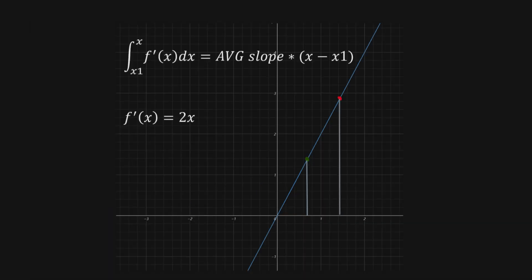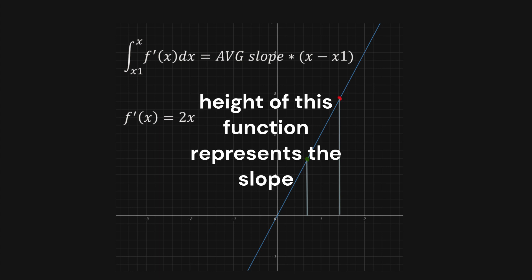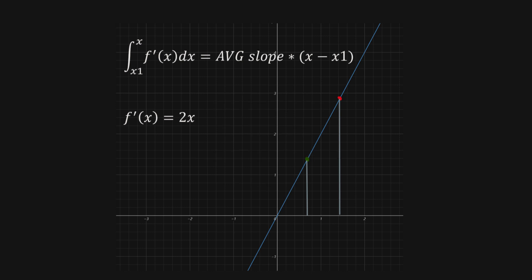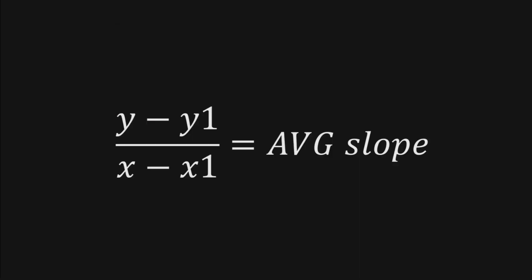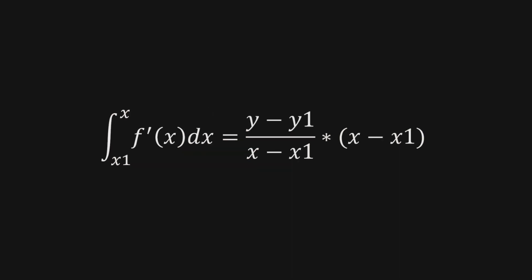And when we do that, the result that we get must equal the average height multiplied by the x domain, which is x minus x1. So we've already found the average slope between the points p and q. Now we are going to substitute that expression into this.